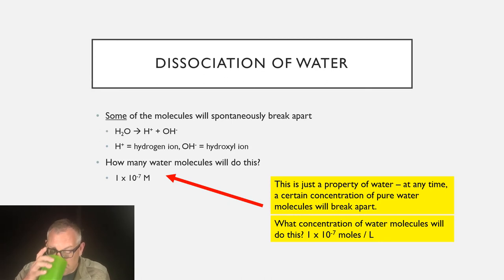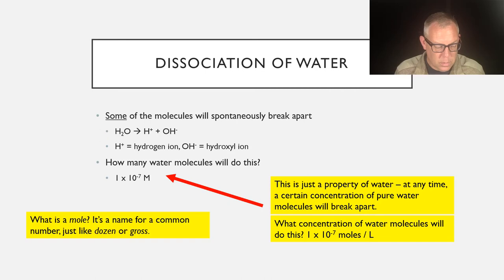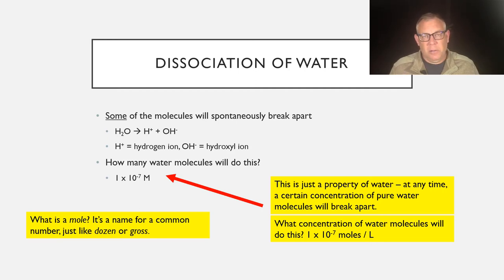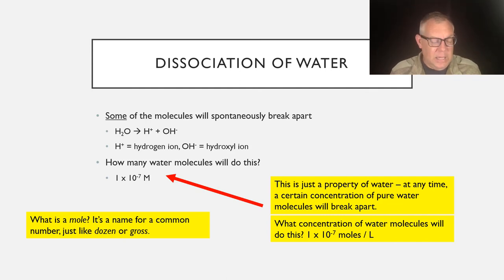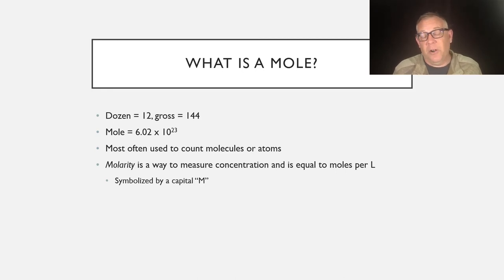A certain concentration of pure water will spontaneously break apart, and that concentration is 1 × 10⁻⁷ moles per liter. Let's review what that means. Moles per liter — what's a mole? Think of it as just a name for a common number, like dozen or gross. A dozen is 12, a gross is 144. A mole is 6.02 × 10²³ — that's Avogadro's number, an important number in chemistry used to count molecules or atoms. Because molecules and atoms are very small, counting them is problematic, but Avogadro's number gives us a way to do it.